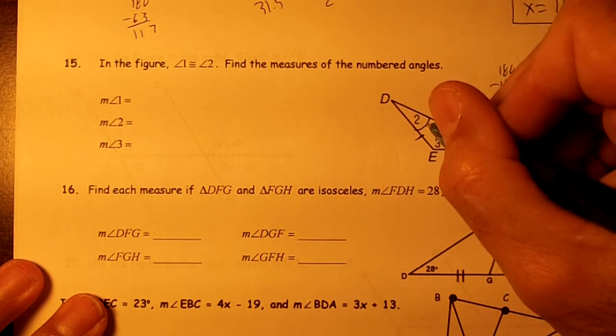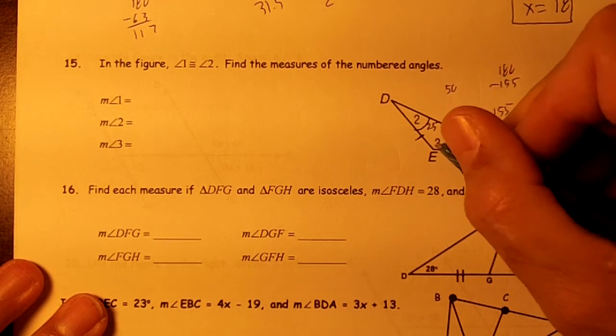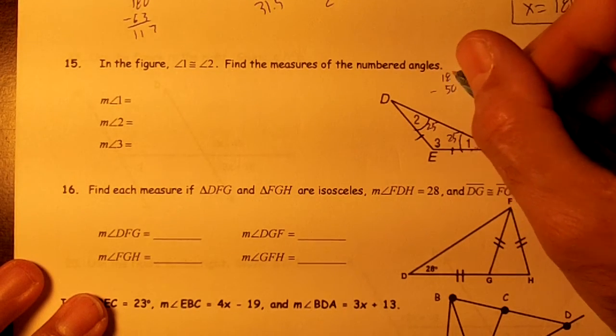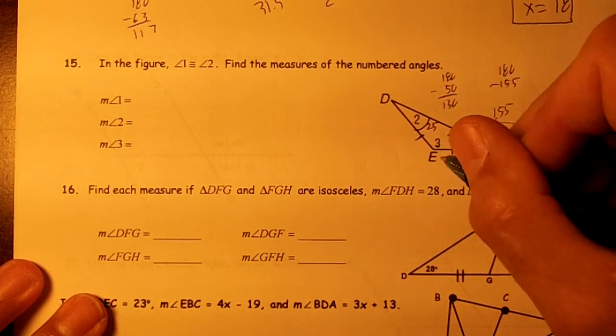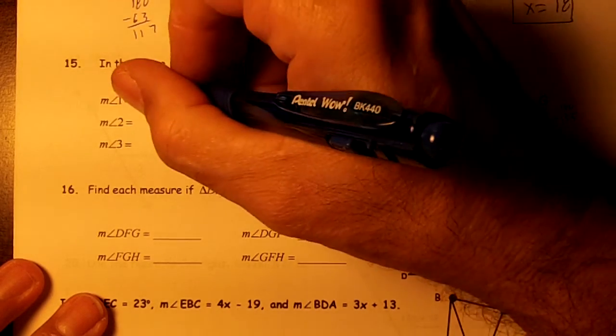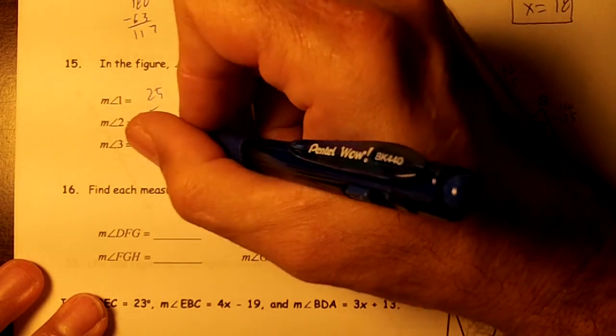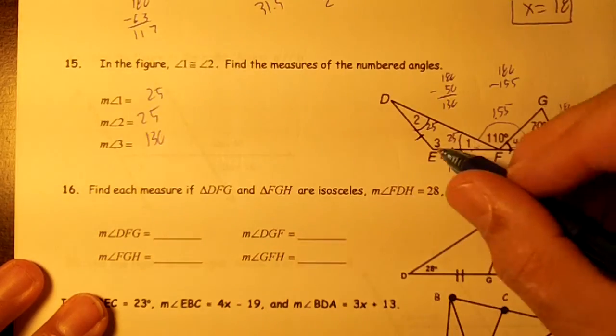That means angle 2 is 25. 25 and 25 add up to 50. This has to subtract from 180 because it's a triangle, and angle 3 would be 130. So angle 1 would be 25, angle 2 would be 25, and angle 3 would add up to 130. These would all add up to 180 in that triangle.